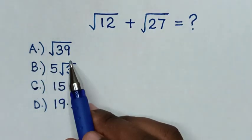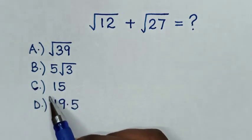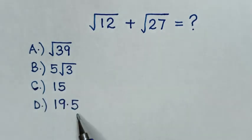Select between the answers: A, square root of 39; B, 5 square root of 3; C, 15; D, 19.5.